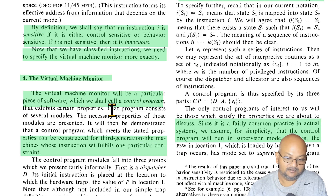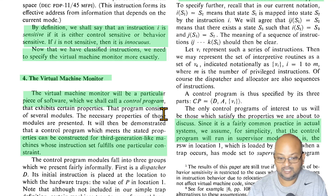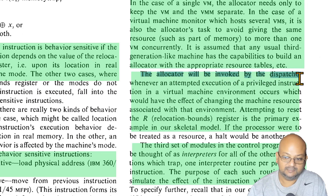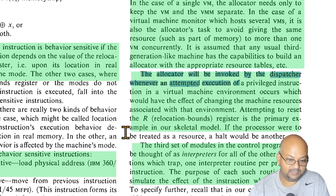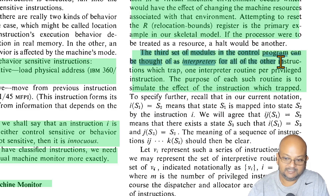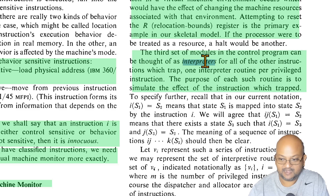Now let's look at the high-level architecture of a virtual machine monitor — the piece of software that constructs a virtual environment and ensures proper isolation. One key part of a VMM is the allocator, which allocates memory to virtual machines and sets the relocation bounds registers properly so that virtual machines don't overstep their boundaries. Another big part is a software interpreter for the small number of privileged instructions that are not directly executed on the actual hardware.